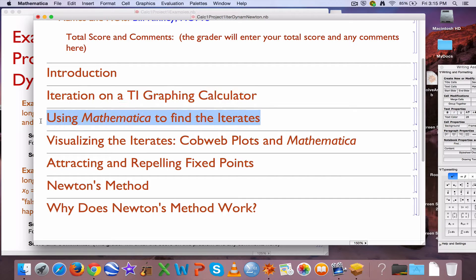The next section has some exercises about iteration on a TI graphing calculator. In the next section we use Mathematica and a command called nestlist to confirm the results of the TI graphing calculator. We visualize the iterates with what are called cobweb plots in Mathematica, we talk about what are called attracting and repelling fixed points. Then we get into Newton's method which is an iterative method to solve equations approximately and finally get into why does Newton's method work.